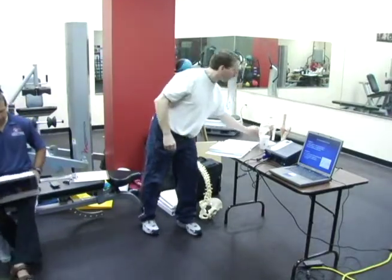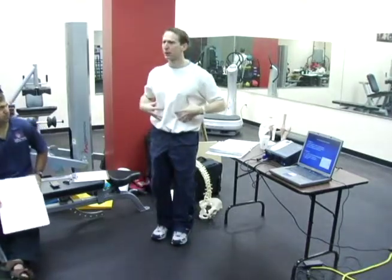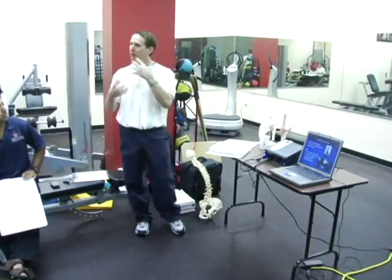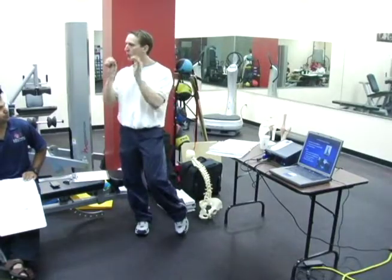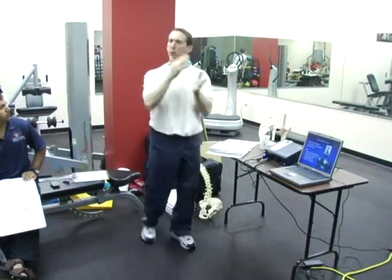The stability component involves creating co-contraction between the weaker anterior muscles and the extensors — the pelvic girdle, which you'll learn more about. We then progress to controlled mobility. This is physical therapy school terminology, and I'm explaining it in layman's terms so you understand how to progress your clients.